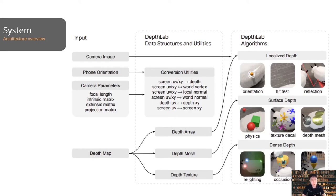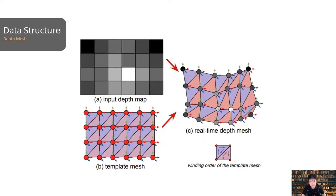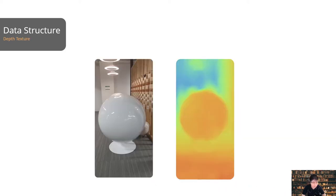When developing DepthLab, we architected and implemented a set of data structures and real-time algorithms for mobile AR developers. We generated three kinds of data structures: depth array, depth mesh, and depth texture. Depth array stores depth in a 2D array of 16-bit integers on the CPU, typically 160 by 120 pixels and above. Depth mesh is a real-time triangulated mesh generated directly from the depth map. Depth texture is a GPU texture decoded from the depth array and interpolated to larger resolution.